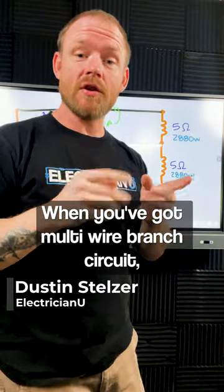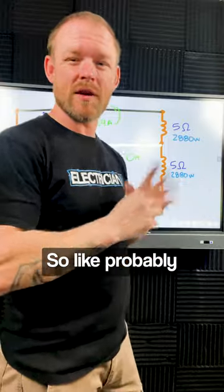When you've got a multi-wire branch circuit, you have two hots and a neutral. The neutral is shared, so probably a piece of 12-3.